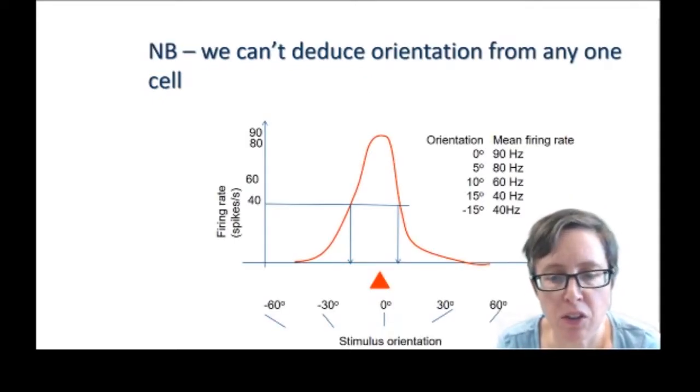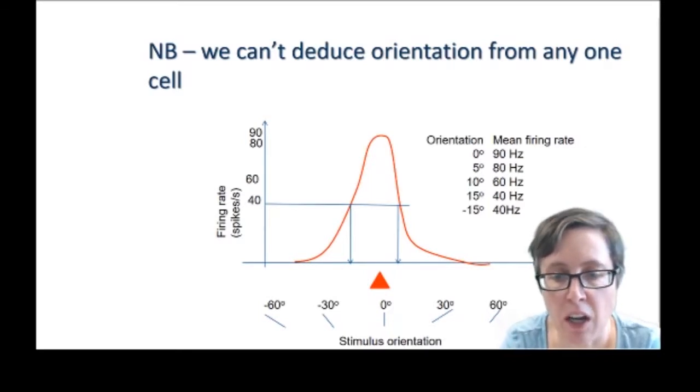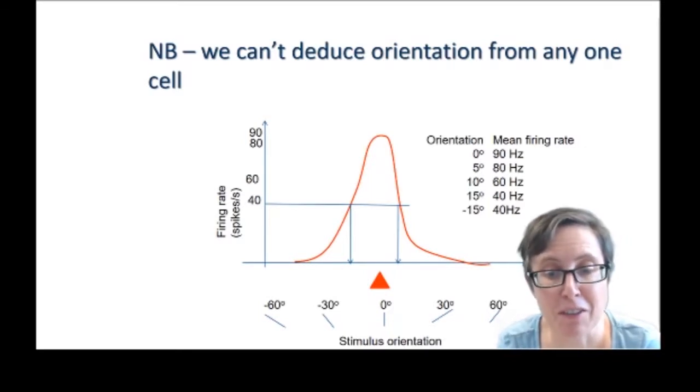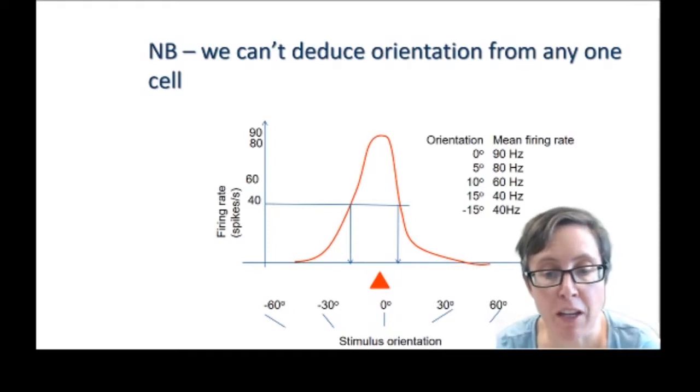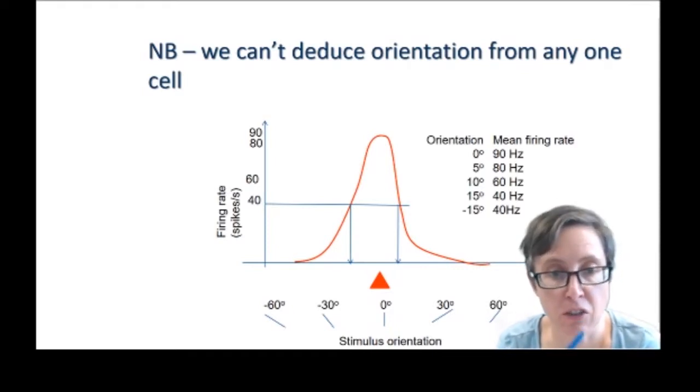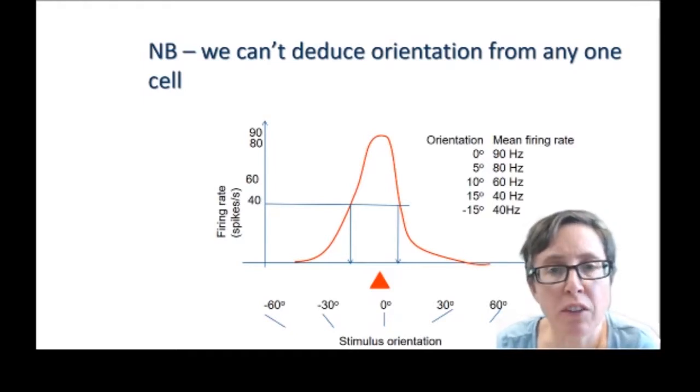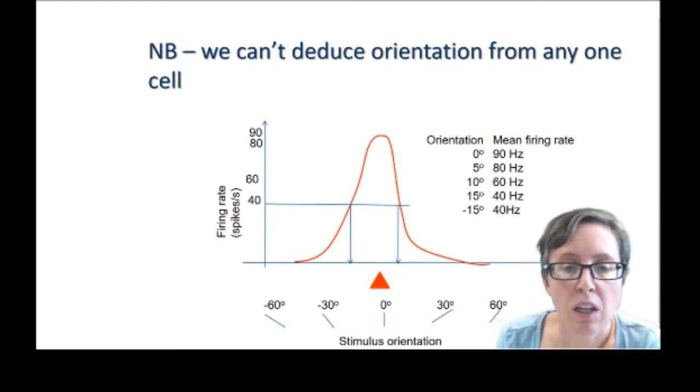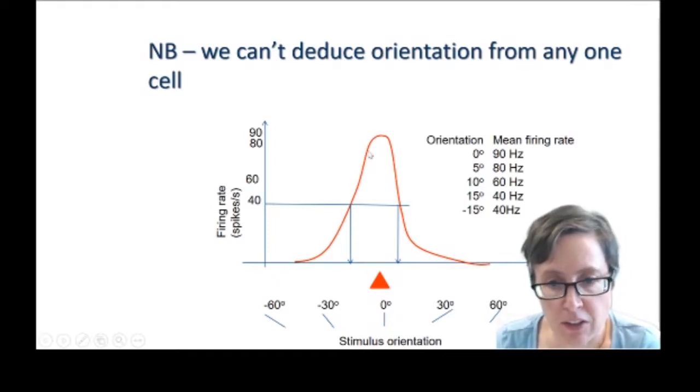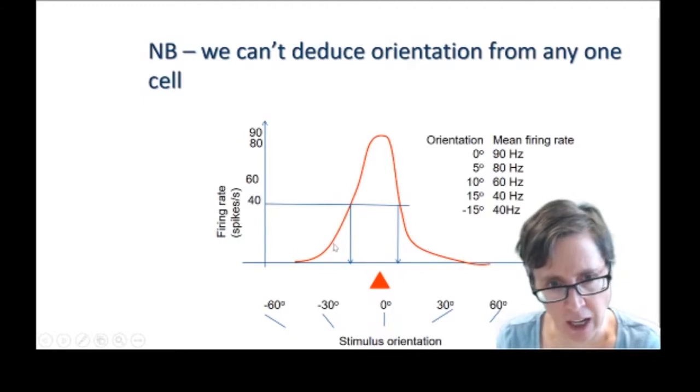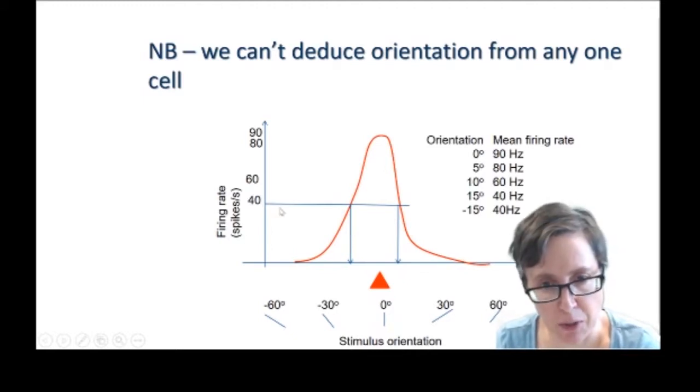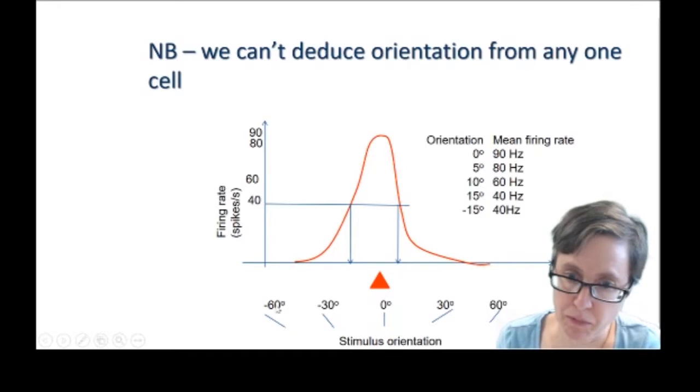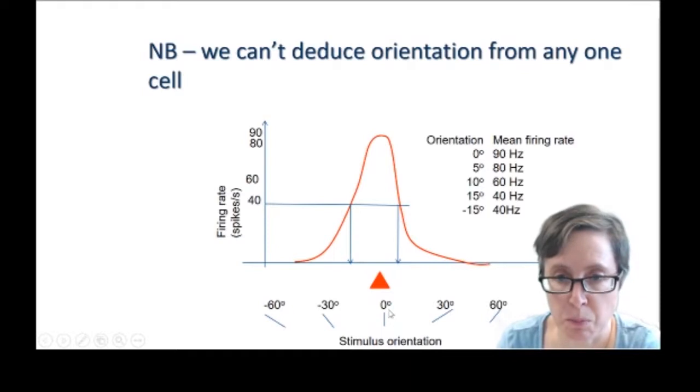It's natural to think that cells that are tuned to the orientation of a line encode information about the orientation of that line. They're telling the rest of the brain there's an edge at this particular orientation at this location in the visual field. But actually you can't deduce orientation from the activity in any one neuron. Let's take a neuron like this. It's got an orientation tuning curve that I've tried to sketch out here, so firing rate in spikes per second, and it is tuned to zero orientation which represents a vertical bar.